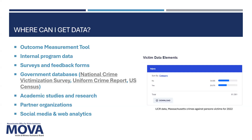Surveys and feedback forms — many of you already have surveys implemented, and those can be a valuable tool to collect data. You can demonstrate program effectiveness and satisfaction metrics, and you can survey clients, staff, volunteers, or other stakeholders. There are also government databases — publicly available data from government agencies such as the census, the Department of Health, or more local agencies. You can use those to measure data against your own. The National Crime Victimization Survey is an anonymous survey not connected to the police, aiming to collect data about victimizations both reported and not reported to police.